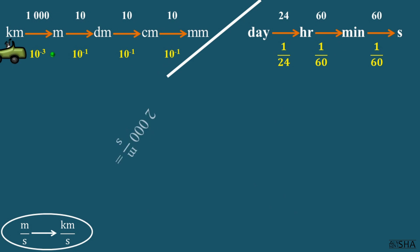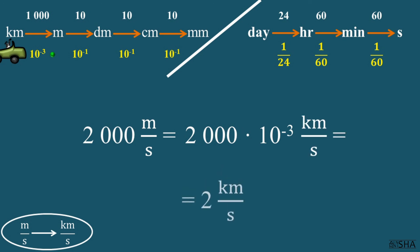2000 meters per second needs to be converted to kilometers per second. We will convert meters to kilometers. Multiply 2000 by 10 to the negative third power. There is no need to convert seconds, so we get an answer right away: 2 kilometers per second.